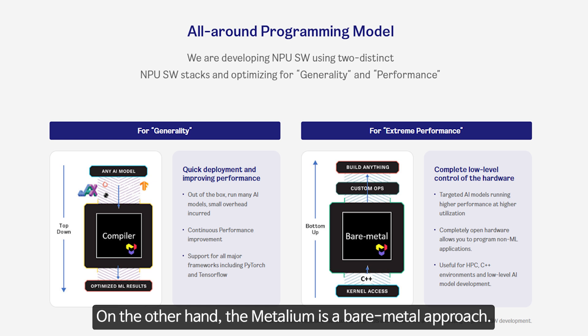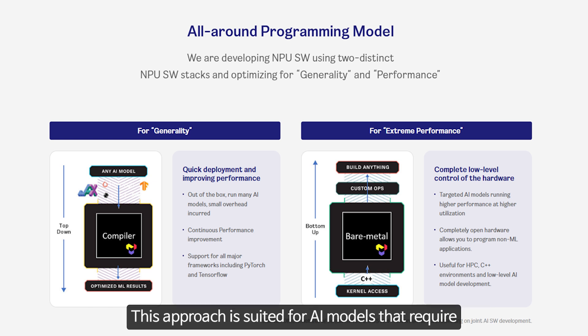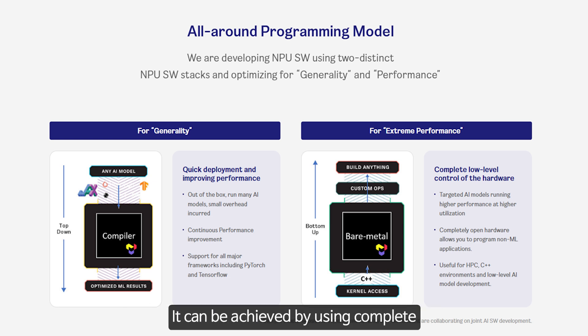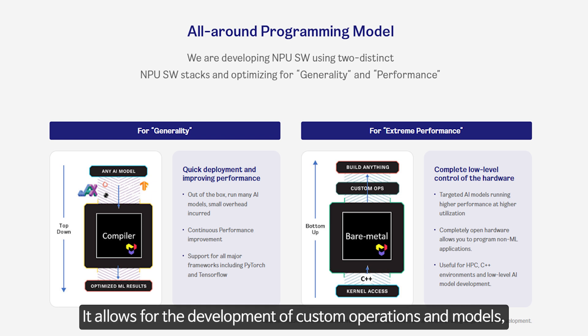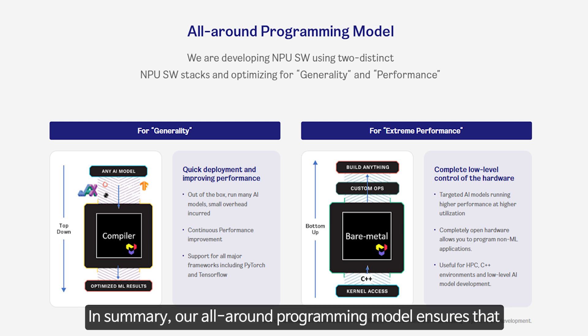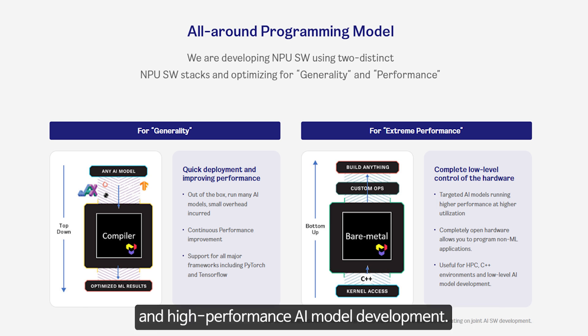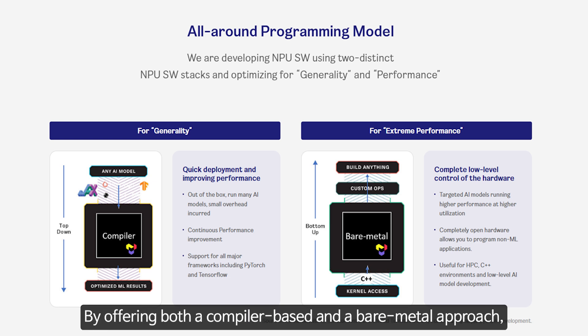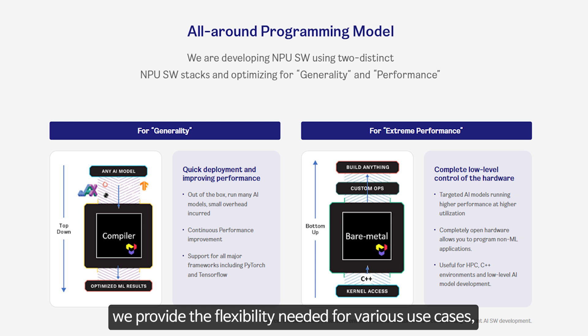On the other hand, Metallium is a bare-metal approach suited for AI models that require relatively high performance and utilization. It can be achieved by using complete hardware control APIs for NPU hardware. It allows for the development of custom operations and models, providing low-level access to the hardware using C++. In summary, our all-around programming model ensures we cater to both general-purpose and high-performance AI model development, offering the flexibility needed for various use cases.